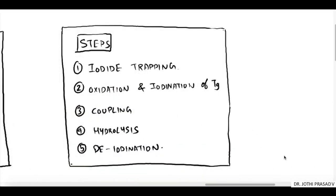Coming to the steps in thyroid hormone synthesis, there are basically five steps involved. The first one being iodide trapping, and next one is oxidation and iodination of thyroglobulin. Third one is coupling reaction, then hydrolysis, and deiodination or peripheral conversion of T3 and T4.